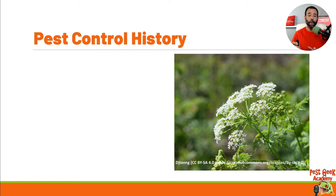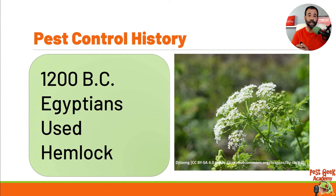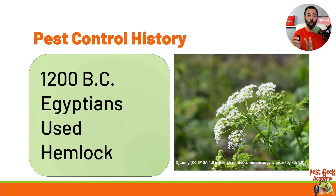We have been using pesticides in one way or another for several thousand years. Going back to the 12th century BC, the Egyptians recorded using hemlock. That is a picture of the hemlock plant, and if you've read history before, you would have read about hemlock poisoning — that little plant is highly poisonous and was used to control insects and other pests.